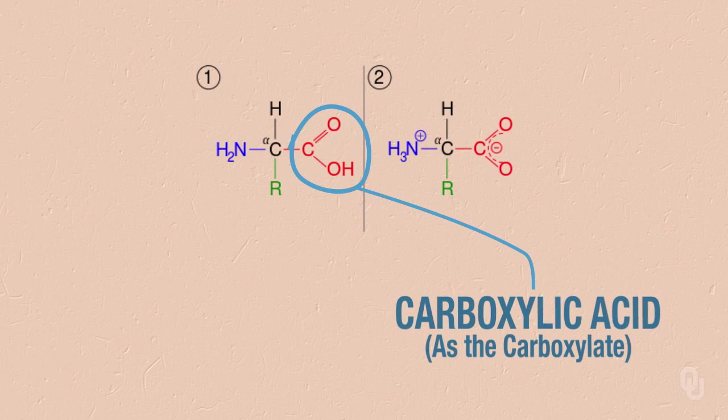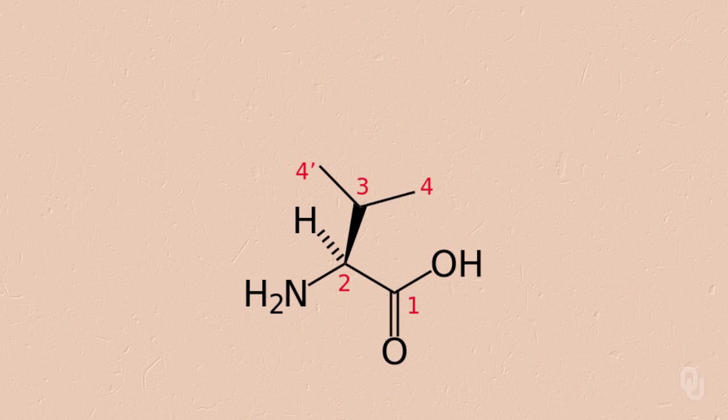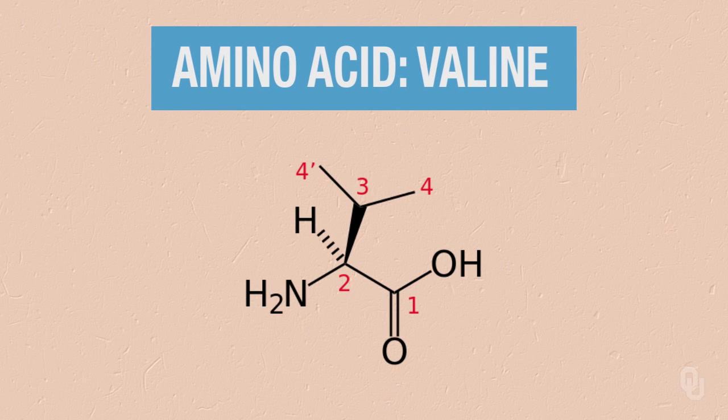The way it's shown here is actually not correct for physiological chemistry. What we often see is the zwitterion. So if we're dealing with near-neutral pHs, we actually have the carboxylic acid as the carboxylate, and we have the amino as the ammonium, or the protonated nitrogen. Here is one of our characteristic amino acids that's very important in brewing —